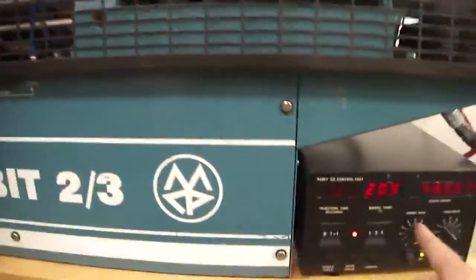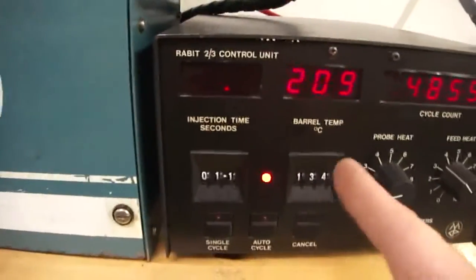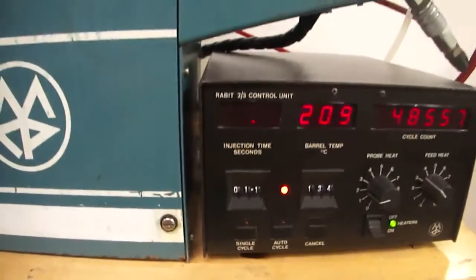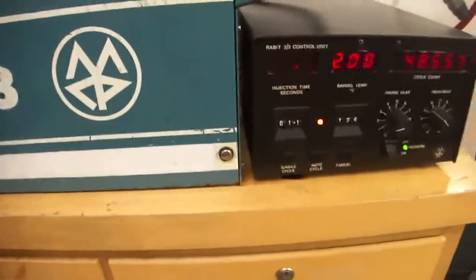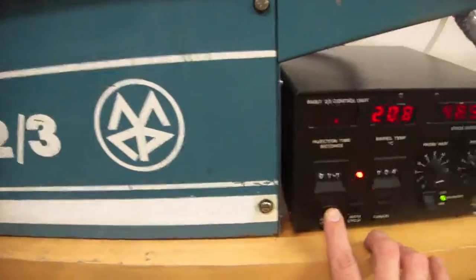So we've got the guard down. Temperature on the controller, we're running—actually that's in Celsius, so it's about 210 right now, warm enough to get the plastic soft enough to move through the machine. I'm going to try the single cycle.